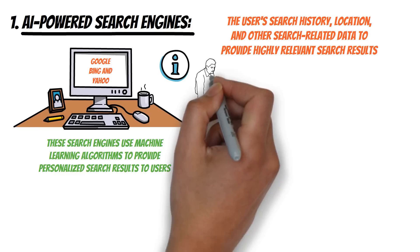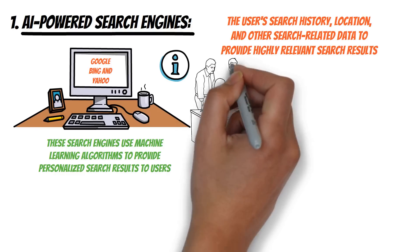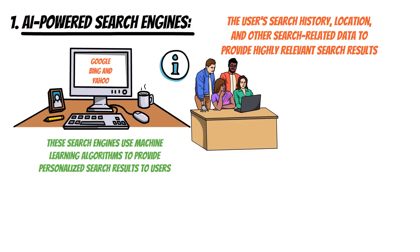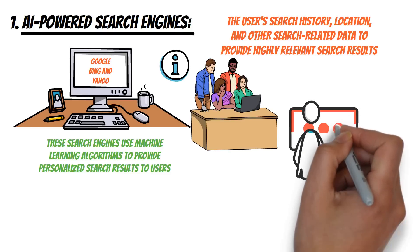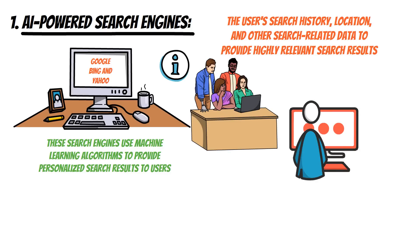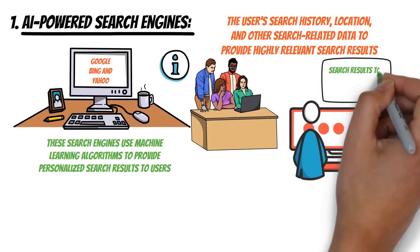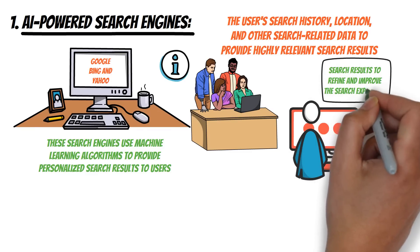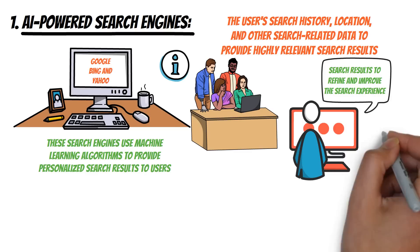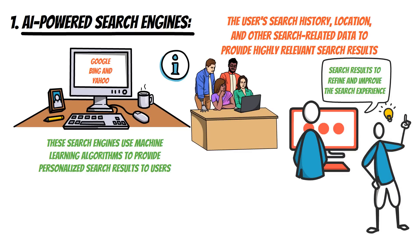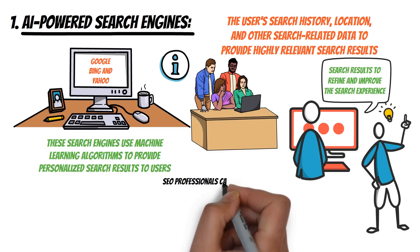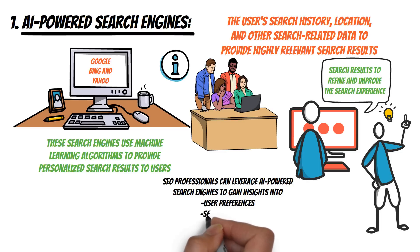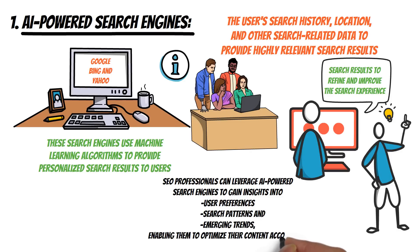AI-powered search engines have made it easier for businesses to optimize their websites and webpages for search engines. AI algorithms constantly analyze user behavior and interactions with search results to refine and improve the search experience. This means that search engines are becoming more intelligent in understanding user intent and delivering the most relevant results. SEO professionals can leverage AI-powered search engines to gain insights into user preferences, search patterns, and emerging trends, enabling them to optimize their content accordingly.